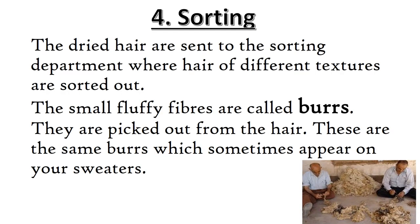Sorting is the next step, which makes it Step No. 4. After scouring, the dried hair are sent to the sorting department, where hair of different textures are sorted out. The small fluffy fibers are called burrs, and they are picked out from the hair. These are the same burrs which sometimes appear on your sweaters. Basically, in this process, different quality hairs are separated.